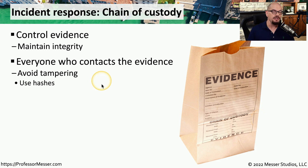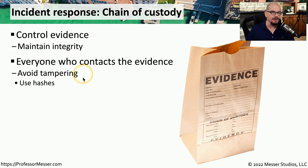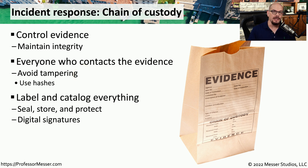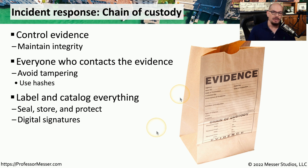If this is digital evidence, we might want to use hashing to ensure that the evidence we're looking at later is exactly the same as the evidence that was originally taken. It's always important when collecting evidence to label and catalog everything. If this is physical evidence, you can put it in an evidence container and seal it to make sure nothing changes.